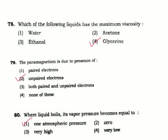Question 80: When a liquid boils, its vapor pressure is equal to — when a liquid boils, vapor pressure is equal to 1 atmosphere pressure. Correct answer is Option 1.